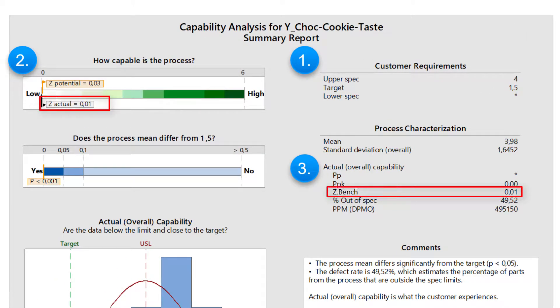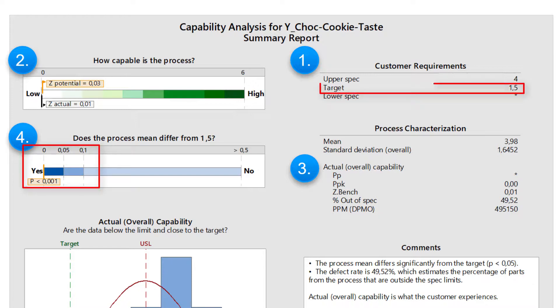The actual sigma level, Z actual 0.01, and the potential sigma level, the best value we could expect under the same conditions without changes is Z potential 0.03. The one sample t-test shows that the mean of the ratings significantly differs from the given target value of 1.5 for the taste.